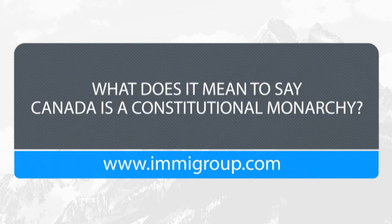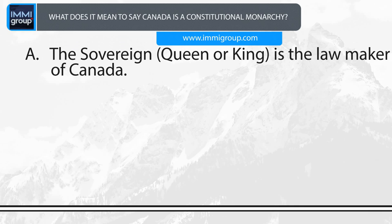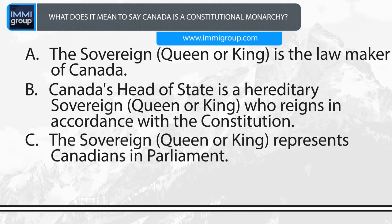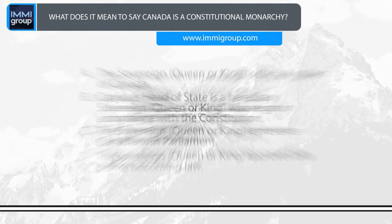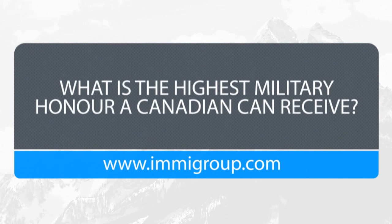What does it mean to say Canada is a constitutional monarchy? A. The sovereign, king or queen is the lawmaker of Canada. B. Canada's head of state is the hereditary sovereign, queen or king who reigns in accordance with the Constitution. C. The sovereign, queen or king represents Canadians in Parliament. D. The sovereign, queen or king approves bills before becoming law. Answer: Canada's head of state is the hereditary sovereign, queen or king who reigns in accordance with the Constitution.